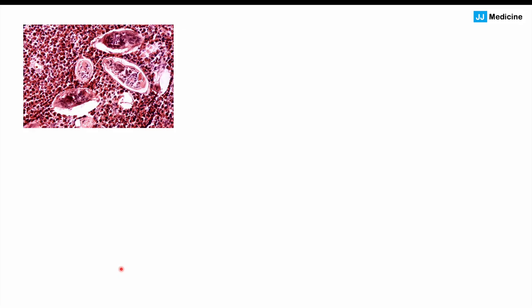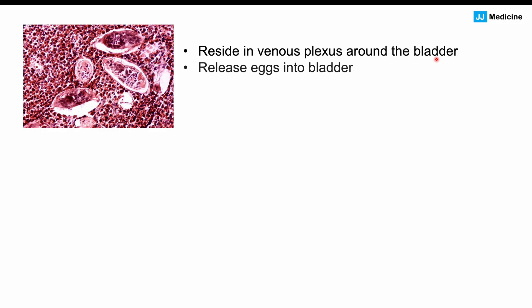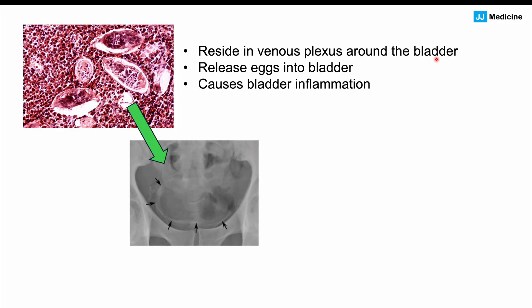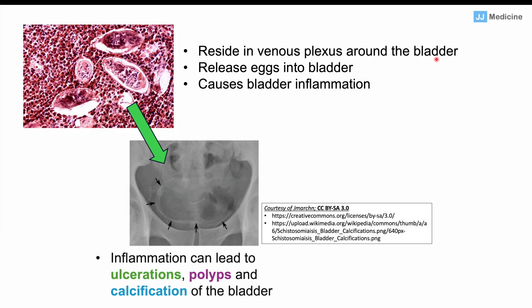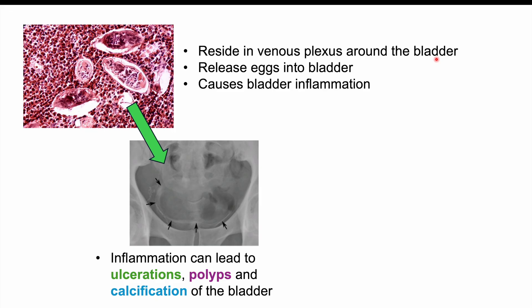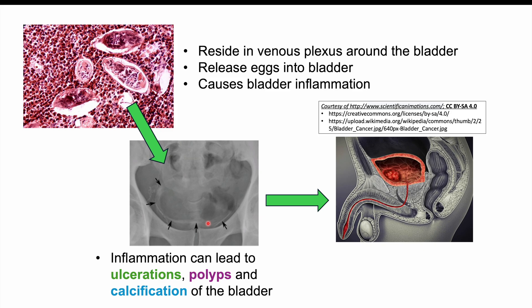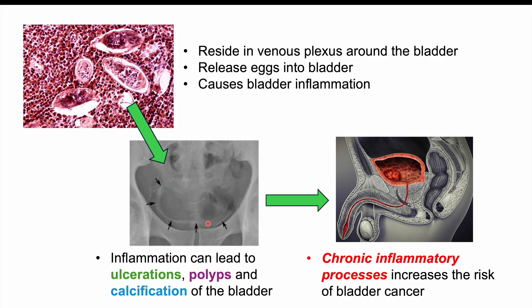Schistosoma hematobium resides in the venous plexus around the bladder — in the veins around the bladder — and the adults release eggs into the bladder. This releasing of eggs leads to inflammation in the bladder. Over time, there is tissue damage in the bladder, which can lead to ulcerations and polyps. There can also be calcifications after long-term inflammation — as seen in this image. All of this prolonged, chronic inflammation can increase the risk of bladder cancer.